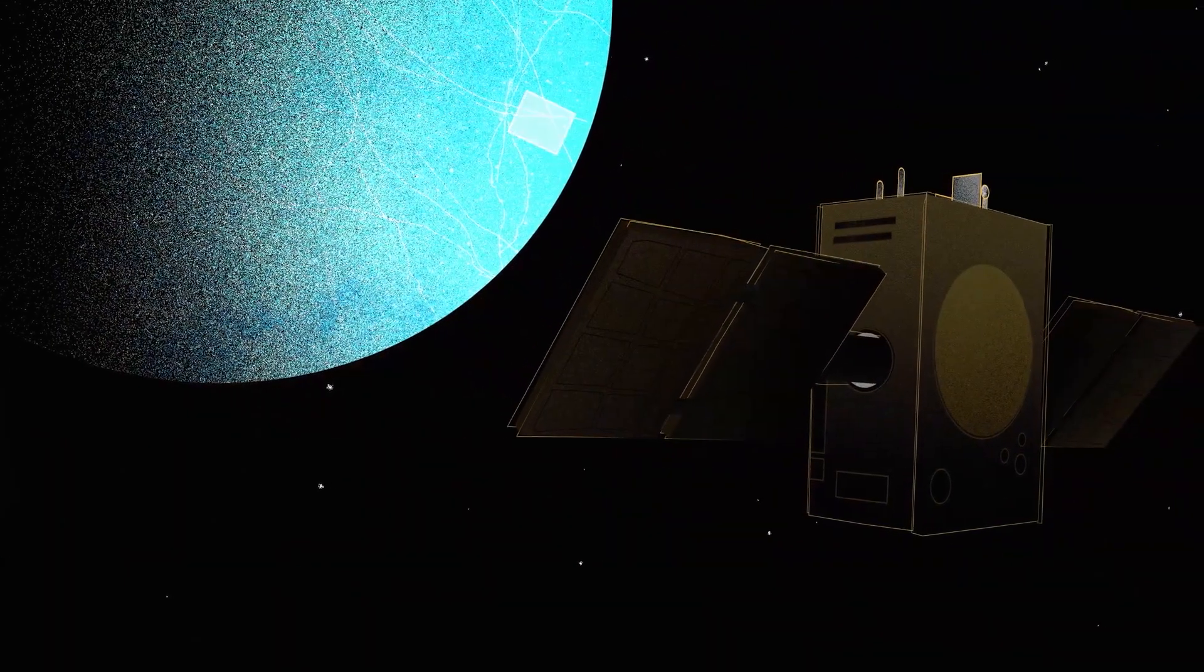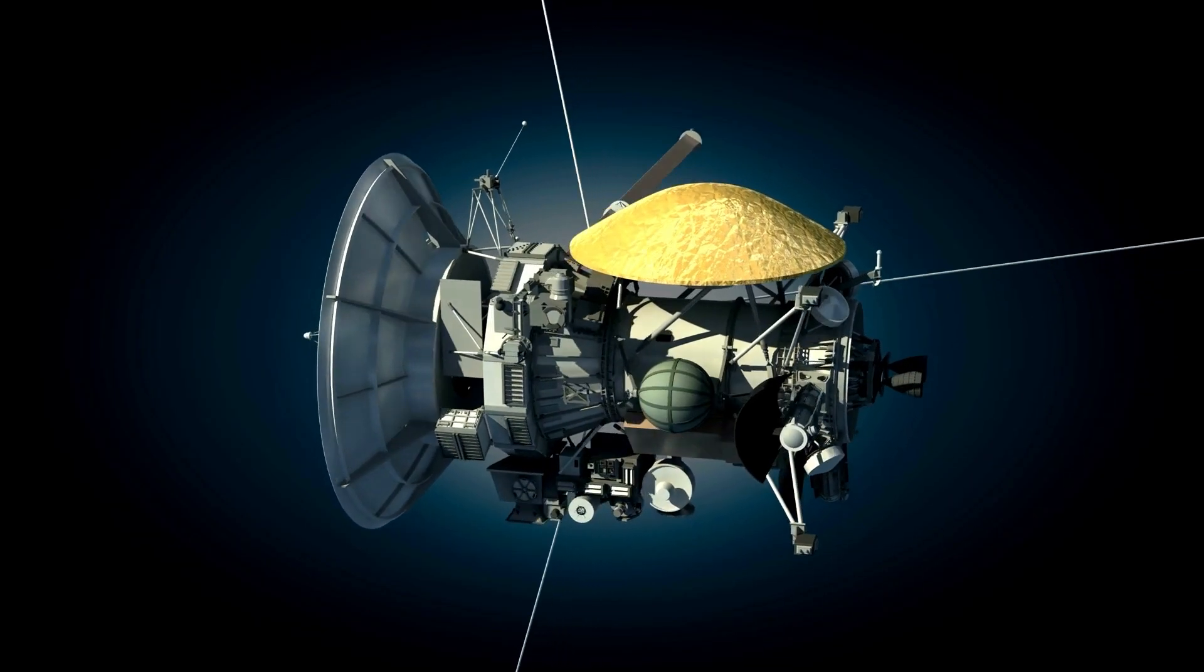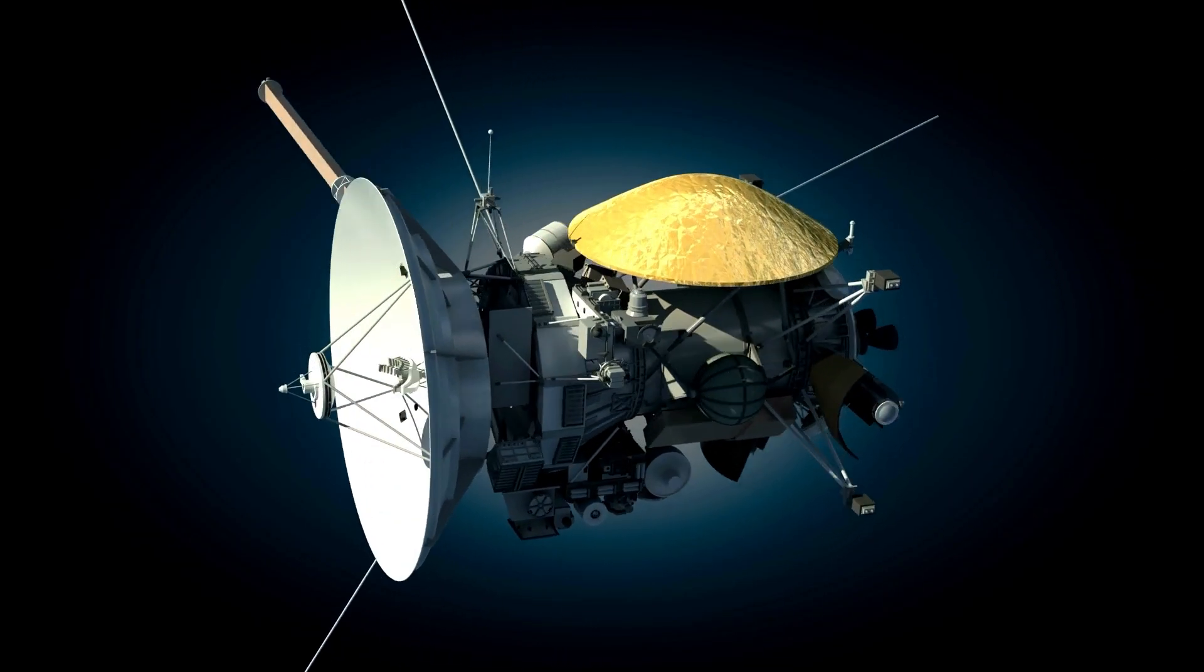But in order to communicate with the DSN, the robotic explorers have a lot to do. The tools they use to communicate can't be too heavy, take up too much room, or use too much power.